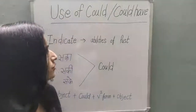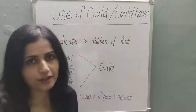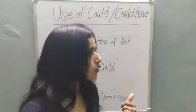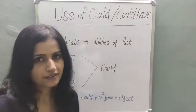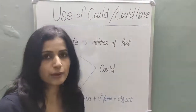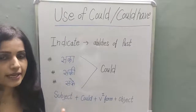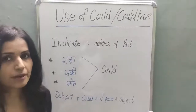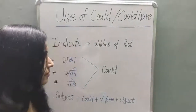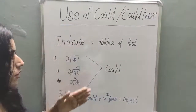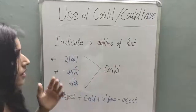Today I will tell you about 'could' and 'could have'. Could is a modal auxiliary verb, which I have told you about with 'can'. Can, could, may, might — they are all modal auxiliary verbs. Today's topic is 'could' and 'could have'.